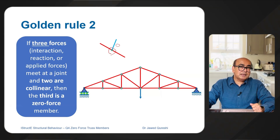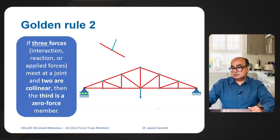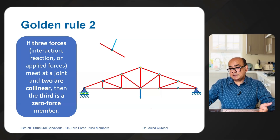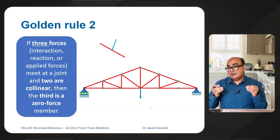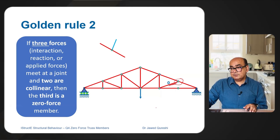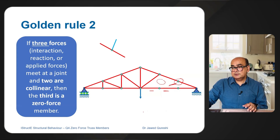Looking at this truss, I can see at this joint there's a zero force member — we have collinear members here and one member being attached, so that force is going to be zero. When the force is zero I can remove that member. Once this member is removed it starts a chain effect on the other members. We again have collinear members with a third member entering, making that third member a zero force member as well, and we remove it. Next, these two members are collinear and the force in this vertical member is going to be zero, so we remove it.